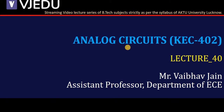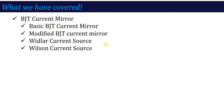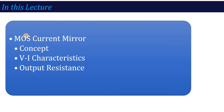Hello everyone, welcome to the video lecture series of analog circuits. The subject code is KEC402 and here we are in lecture number 40. In the previous lecture, we were talking about unit number 4, that is current mirror based circuits. We talked about BJT current mirror — the basic current mirror, modified version, Widlar's current source and Wilson's current source. Now, in this lecture, we are starting with MOS current mirror.